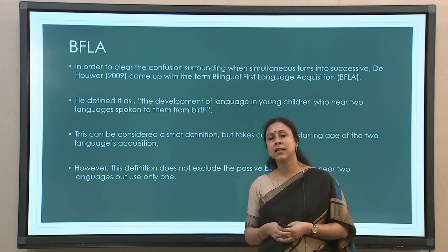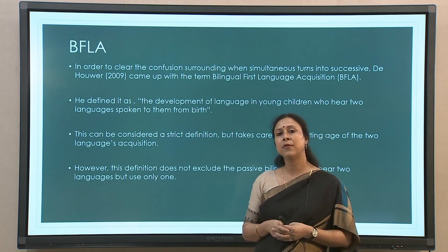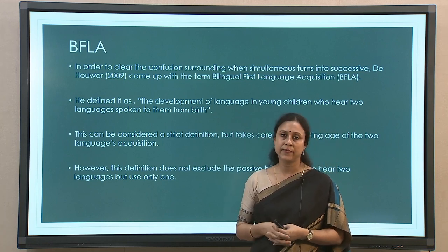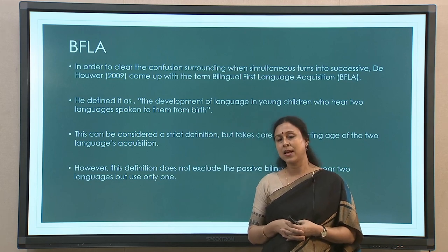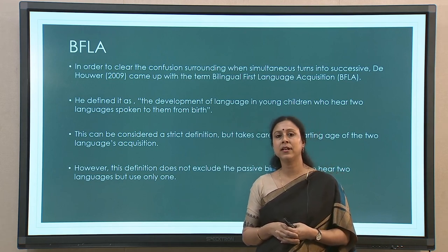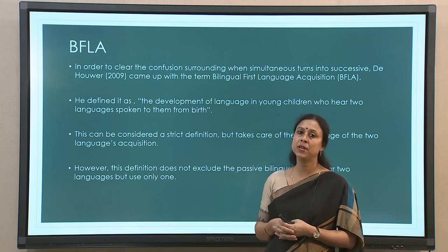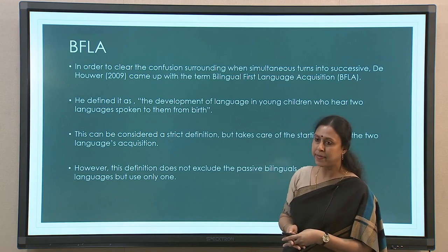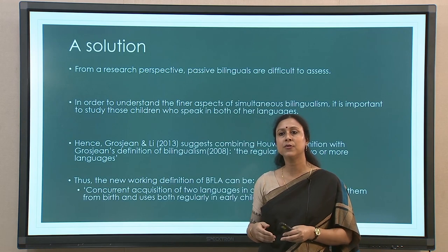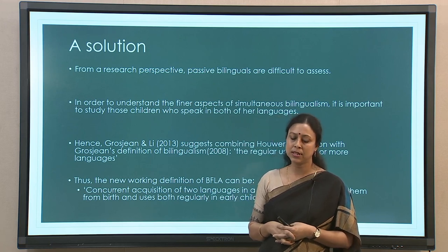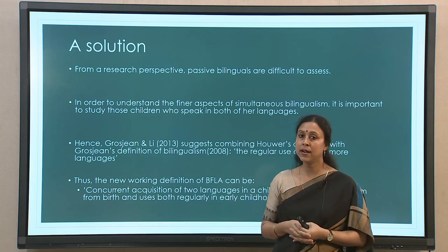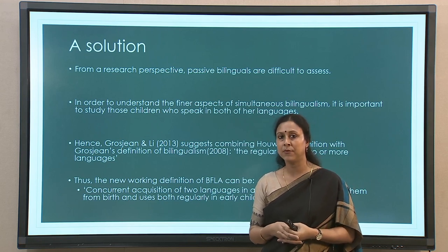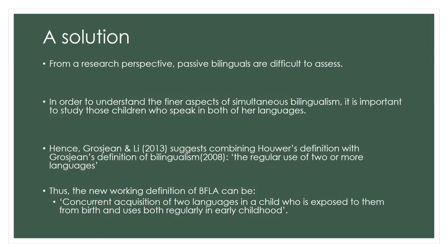This brings another set of problems. Imagine some children listen to two languages from birth — say their parents speak different languages, mother speaks language A and father speaks language B. Often it has been seen that many children, even if they are exposed to two languages, choose to speak only one — they are called passive bilinguals. If you are a passive bilingual it becomes a little difficult and tricky to study bilingualism in the child. In order to address this, proposals were made that we should include only those children who not only are exposed to both languages but also use both languages from early childhood.